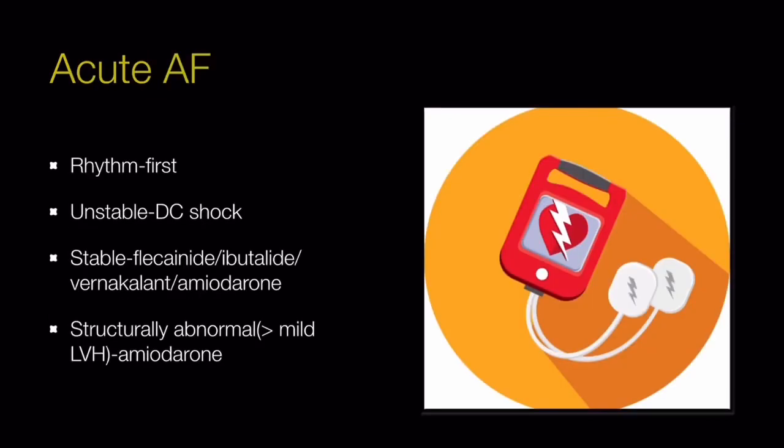For the management of acute atrial fibrillation (less than 48 hours), rhythm control strategy is the first-line option. If the patient is hemodynamically unstable, DC shock is preferred. If the patient is stable, we can use flecainide, ibutilide, vernakalant, or amiodarone. Amiodarone is preferred in structurally abnormal hearts — defined as anything more than mild left ventricular hypertrophy.